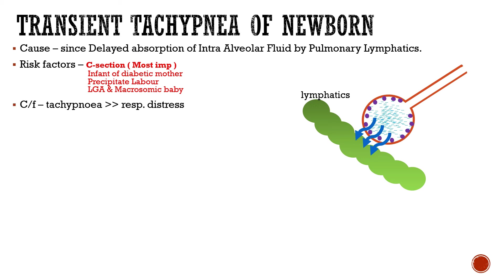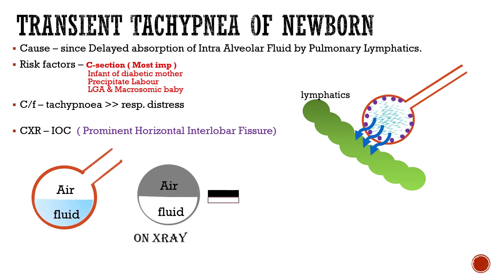Coming to the clinical features, the most common is an increase in respiratory rate, which is much more common than respiratory distress. The investigation of choice is chest x-ray, which shows prominent horizontal interlobar fissure. Air appears black and fluid appears white on x-ray, so a black-and-white air-fluid differentiating column can be seen. Treatment is mainly conservative — more than 99% recover spontaneously.